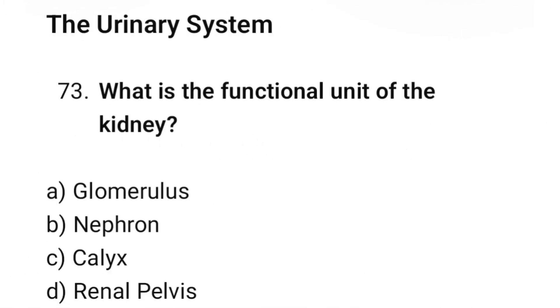Question number 73: What is the functional unit of the kidney? The correct option is B. Nephron.